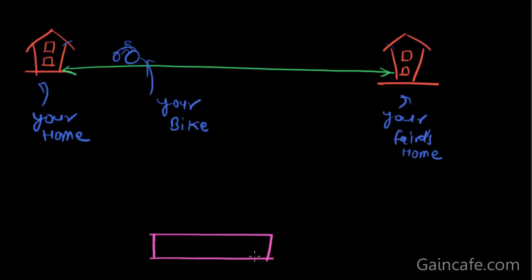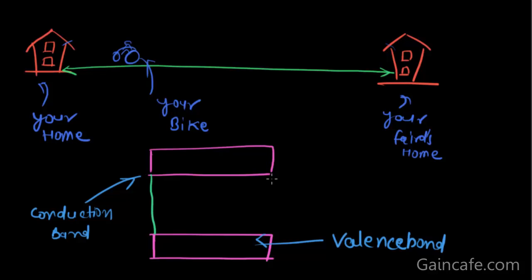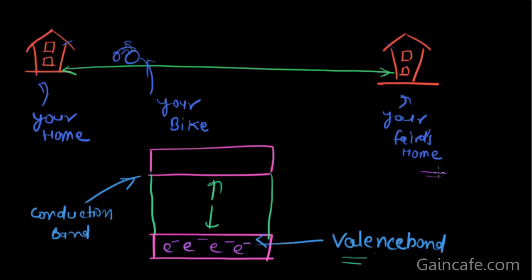There are two bands — this one we call the valence band, and this one we call the conduction band. This gap between them is equal to the distance between your home and your friend's home. Electrons live in the valence band, so the valence band is your home, while the conduction band is your friend's home, and this gap is the distance between your home and your friend's home.